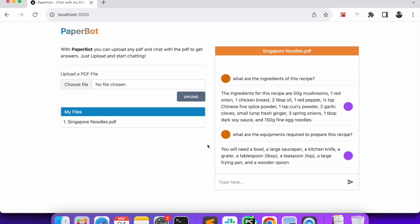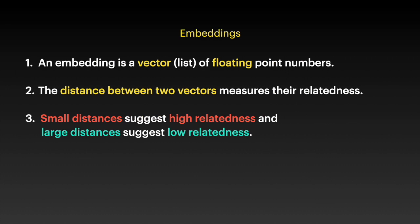The first topic I want to discuss is embeddings. An embedding is a vector — a list of floating point numbers. It's a list, we call it a vector. And it's a list of floating point numbers, not integers — it's a list of floating numbers with some decimal points.